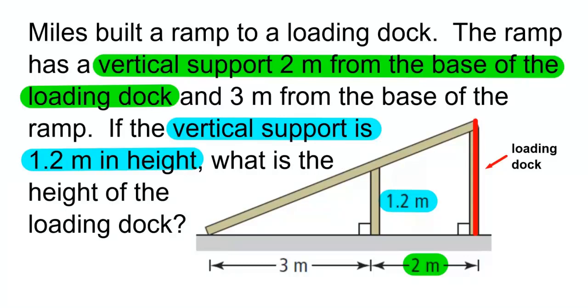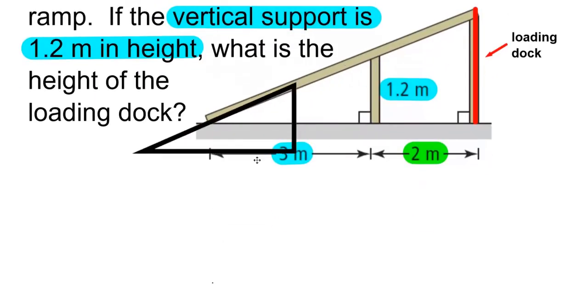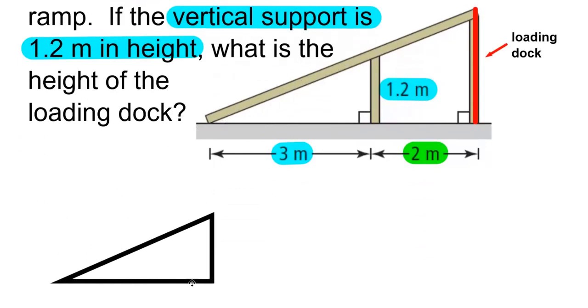We can solve this question using similar triangles. The first right-angled triangle would be located here. The height of the triangle would be 1.2 meters, and the base of the triangle would be 3 meters. Redraw the triangle and put the dimensions that you know in.